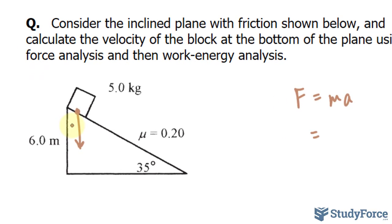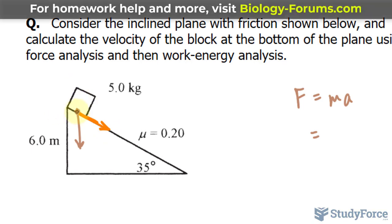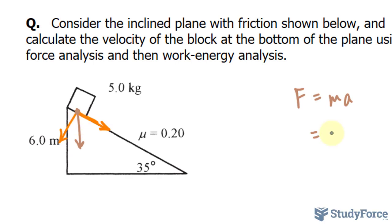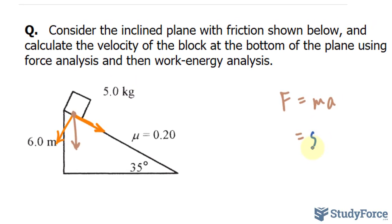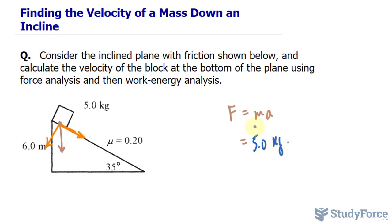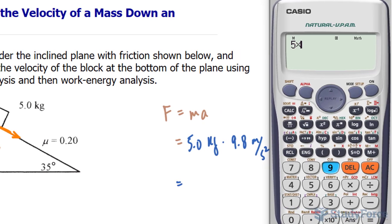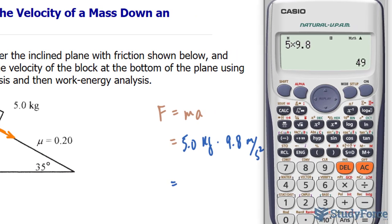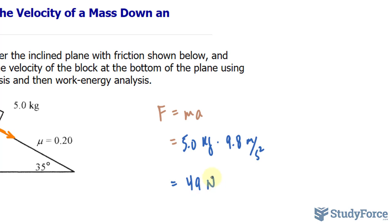In addition, this vector can be broken down into its components: one component going along the plane, and another one perpendicular to the plane. To find the magnitude of the gravitational force, we take the mass of 5.0 kilograms and multiply by the acceleration due to gravity, 9.8 meters per second squared. Multiplying 5 times 9.8, we end up with 49 newtons.